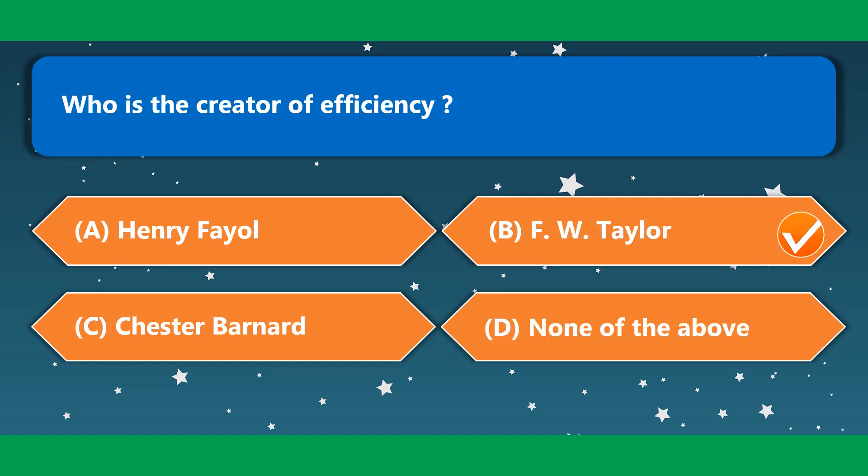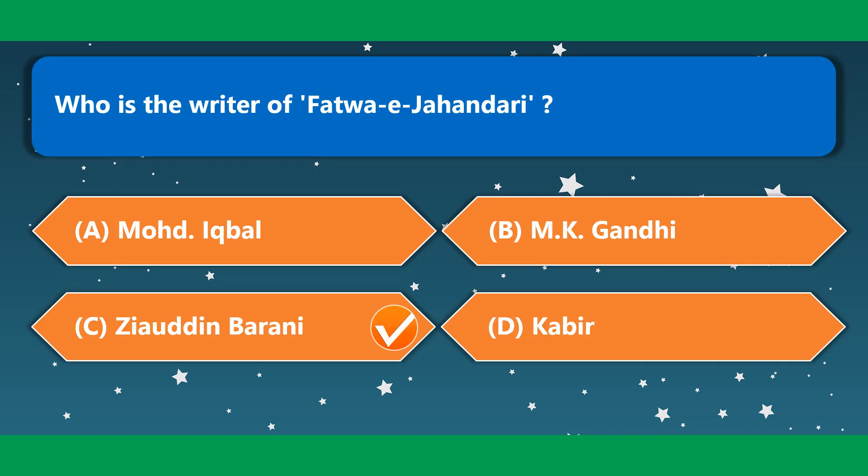Who is the creator of efficiency? F.W. Taylor. Who is the writer of Fatwa-e-Jahandari? This is the famous work of Ziauddin Barani.